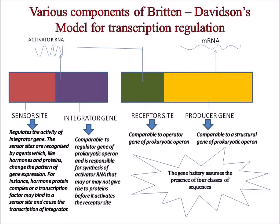Various components of Britten-Davidson's model for transcription regulation include four genes: sensor, integrator, receptor, and producer. The sensor sites regulate the activity of the integrator gene. The sensor sites are recognized by agents like hormones and proteins, which change the pattern of gene expression. For instance, a hormone-protein complex or a transcription factor may bind to a sensor site and cause the transcription of the integrator. The integrator gene is comparable to the regulator gene of a prokaryotic operon and is responsible for synthesis of RNA that may or may not give rise to protein before it activates the receptor site.